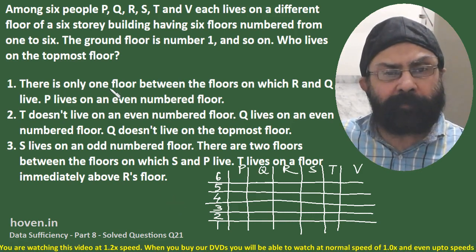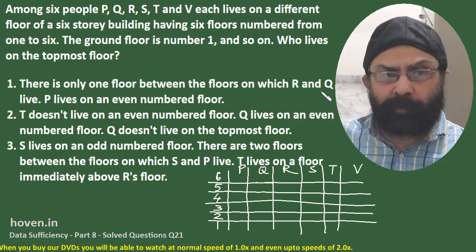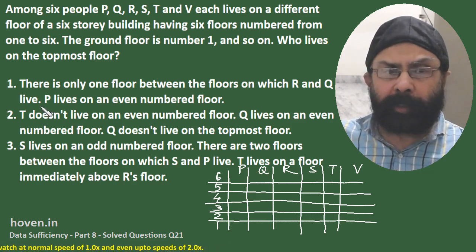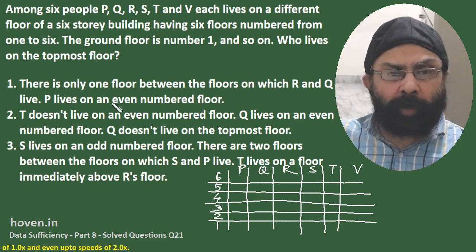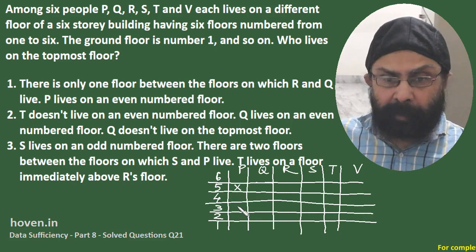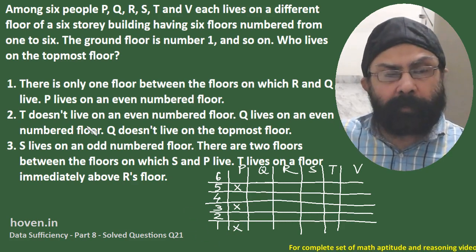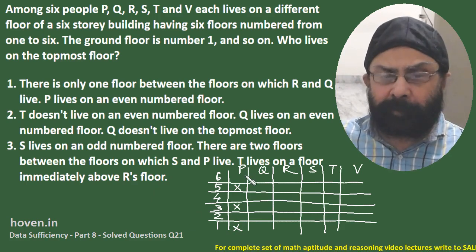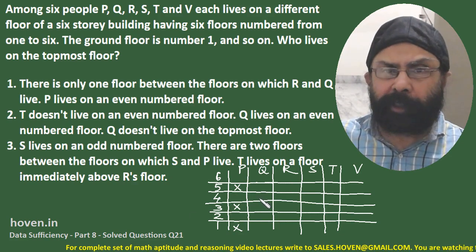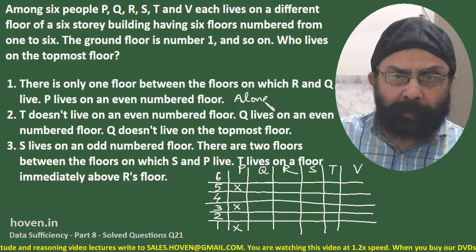Now, the first statement says there is only one floor between the floors on which R and Q live — so there is a one-floor gap between R and Q. This piece of information will not be of any help to us at this stage; it will come to our help later. Scanning further: P lives on an even numbered floor. From the grid we can now see that P cannot live on floor 5, P cannot live on floor 3, P cannot be on floor 1. From the first statement alone, all we have seen is where P cannot live and something about R and Q. So we are dead sure that the first statement alone is going to be no help to us — not sufficient alone.